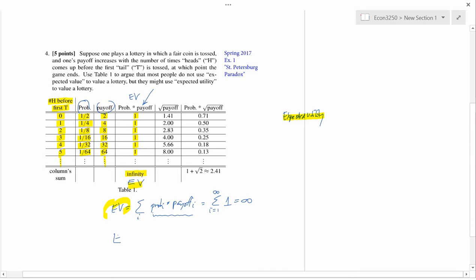Let me write mathematically what the expected utility formula is. Expected utility, EU, is the sum over i of the probability of event i, not multiplied by the payoff of event i, but multiplied by the utility of the payoff of event i.